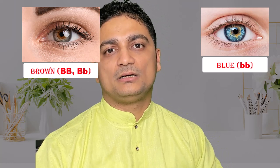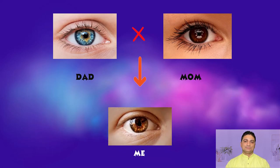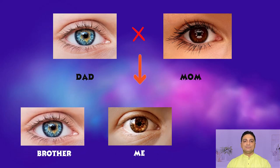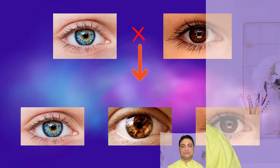Let's take an example of eye color. One gene governs eye color, with one allele coming from your dad and the other allele coming from your mom. If your dad has blue eye color and your mom has brown eye color, then the segregation is going to be a little complex — you might have brown eye color, your brother might have blue eye color, and your sister might have brown eye color.